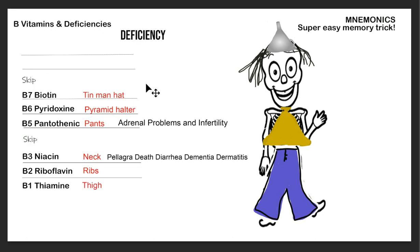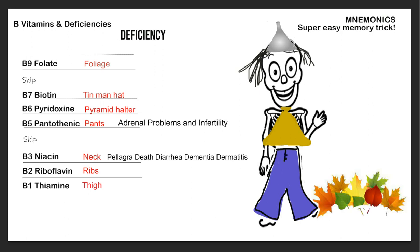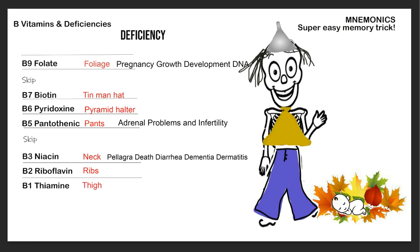So the sequence so far is: thiamine (thigh), riboflavin (ribs), niacin (neck), skip, then the clothing layer — pants, halter top, tin man's hat. Now we add B9, folate. Folate reminds me of 'foliage' — shrubs and greenery. Folate is important for pregnancy, growth, and development, so deficiency causes problems in those areas. You can draw a little baby nestled in the foliage to remember that.